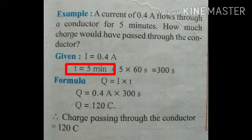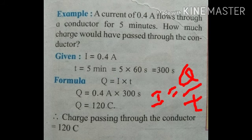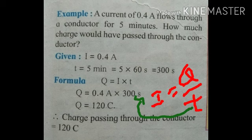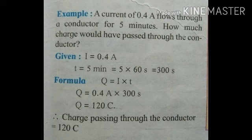Always remember that when solving problems, time should be taken in seconds. So minutes must be converted to seconds. 1 minute = 60 seconds, so 5 minutes = 5 × 60 = 300 seconds. Now using the formula I = Q/T, we need to find Q. So Q = I × T. Replacing values: Q = 0.4 × 300 = 120 C, where C is coulomb. Therefore, the charge passing through the conductor is 120 coulombs. I hope you have understood the topic.